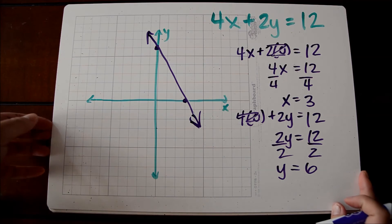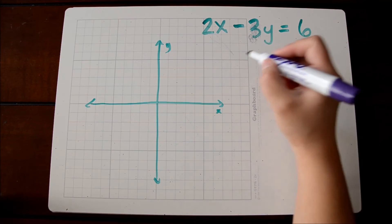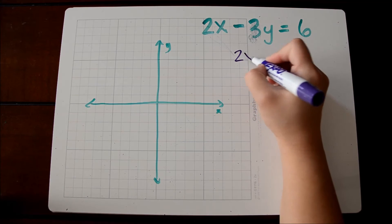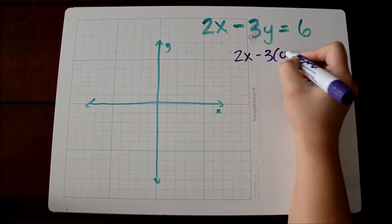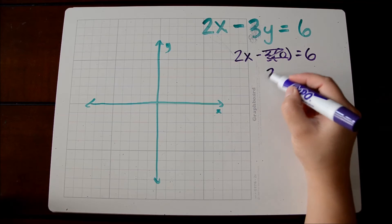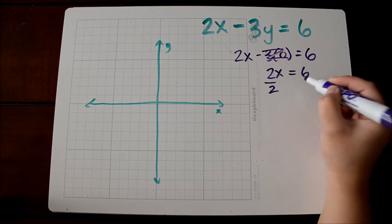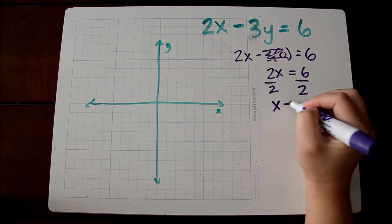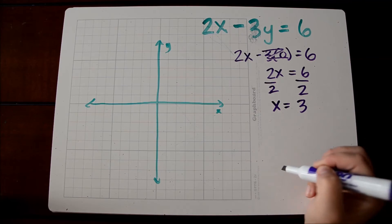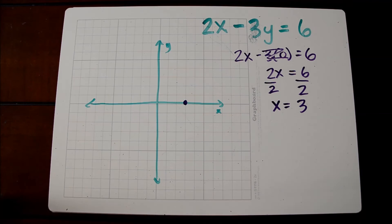Let's take a look at another example. Here we have another standard form equation. We're first going to find our x-intercept by substituting in 0 for y. So we get 2x minus 3 times 0 equals 6. Anything times 0 is 0, so we're left with 2x is equal to 6. When we divide to solve for x, we get x is equal to 3. So our x-intercept is at (3, 0) because the y-value is 0.